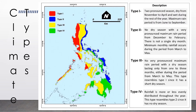This is a climate map that shows us the climate types in the Philippines. We have four types of climates named Type 1 to Type 4. Each climate has its own characteristics.